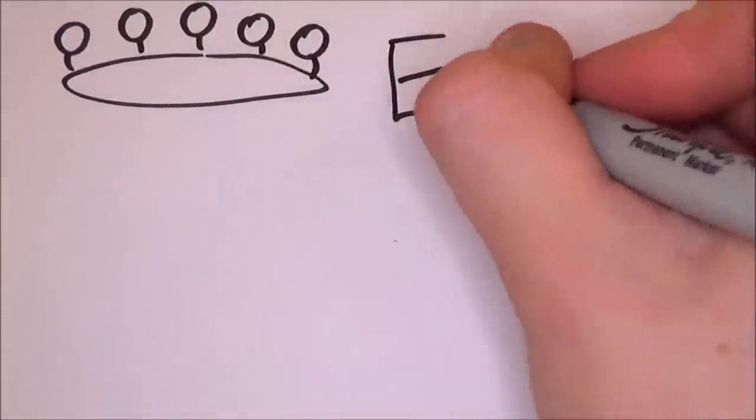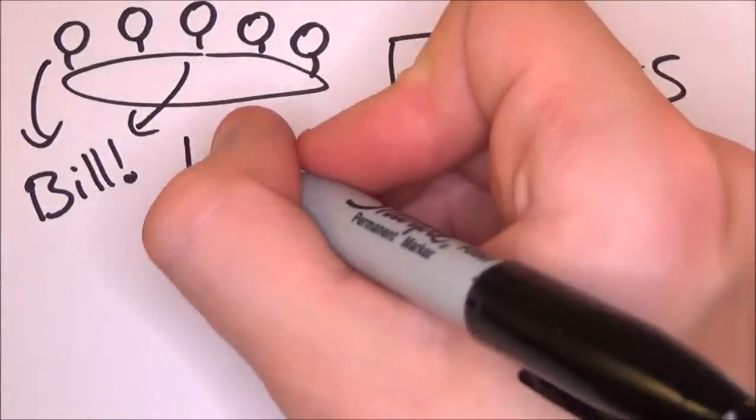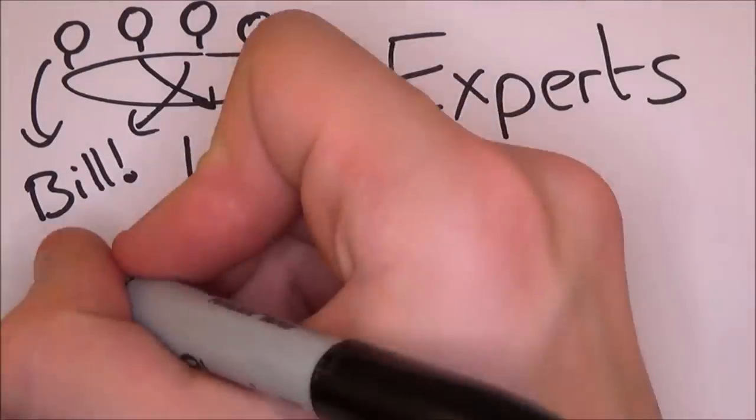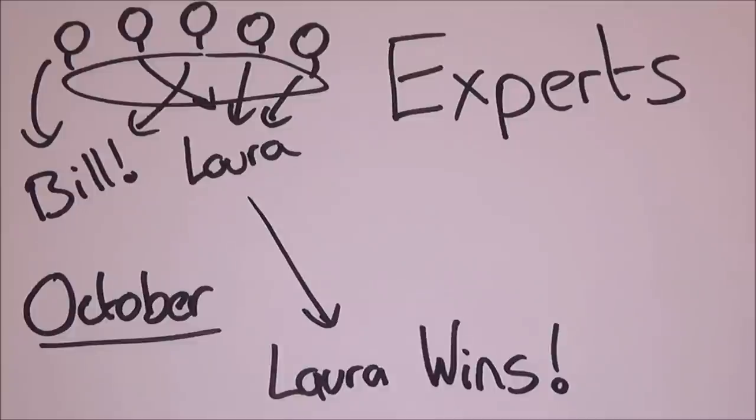All the candidates are then reviewed by experts in the field and permanent members of the committee. The committee will then try and reach a unanimous vote on the winner in each field. If they can't reach one by the deadline at the beginning of October, a majority vote will be used for the winner.